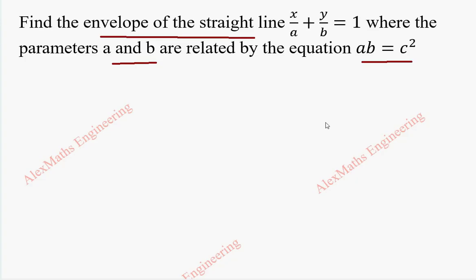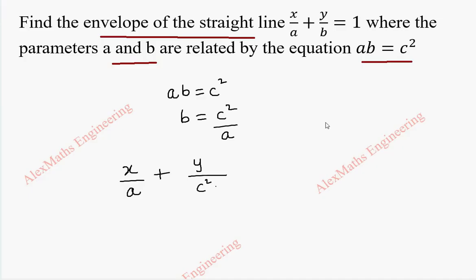To find the equation of the envelope, we have to differentiate the given equation with respect to the parameter and eliminate the parameters present. We know the parameters are related by ab = c², so from this we can take b = c²/a. We substitute this into x/a + y/b = 1, so x/a + ay/c² = 1.